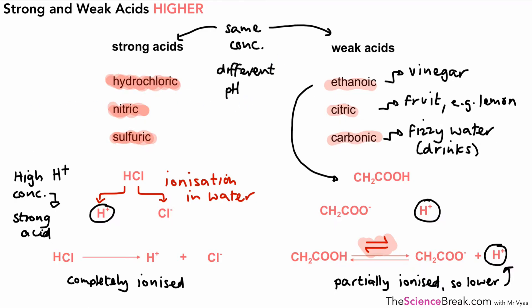So same concentration, different pH — and that's the reason why we have strong and weak acids. It's all to do with the amount of ionization that happens, and it's all to do with hydrogen ion concentration as a result of that ionization.